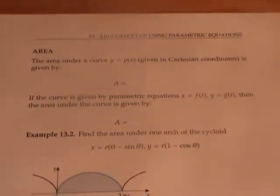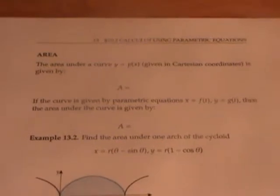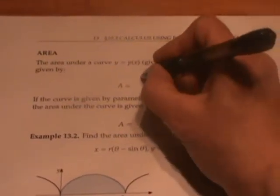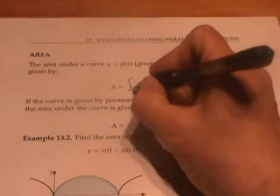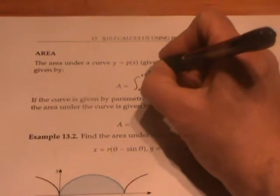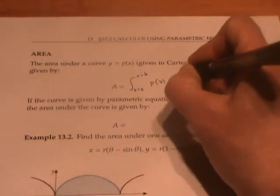Remember back in Calc 1, when we wanted to find the area under a curve, y equals p of x, given in Cartesian coordinates, we just took the integral from some starting x value to some ending x value of p of x dx.